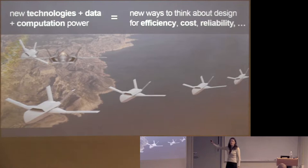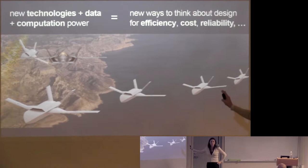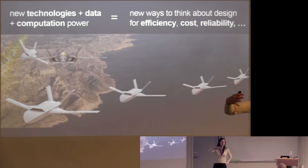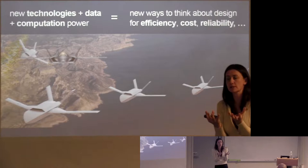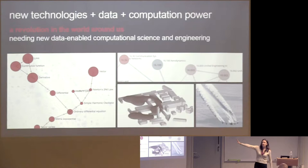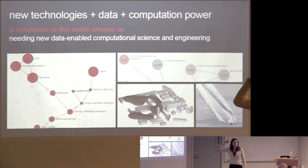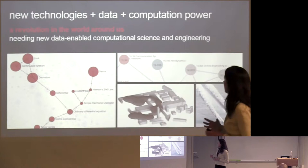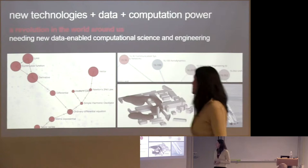This is only going to be possible if you can leverage sensing technology and computational methods to actually figure out how these vehicles are degrading over their life cycle. Because if you don't know how healthy the vehicle is, how do you know what it's capable of? How do you plan the mission? How do you decide whether it's reasonable to fly? Much of what I'm saying — you could remove aerospace vehicles and put in civil infrastructure, cars — the revolution is really in almost every engineered system.